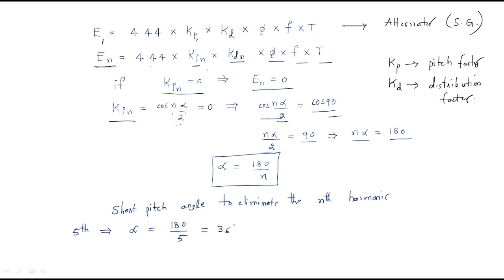By using a 36 degree short pitch angle, we can remove the 5th harmonic EMF. Similarly, we can also remove the 6th harmonic using an appropriate short pitch angle.